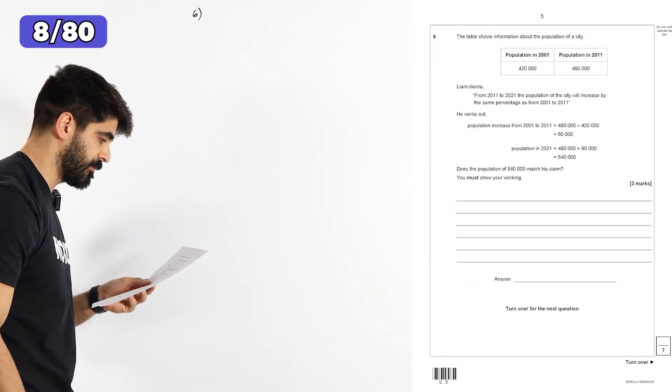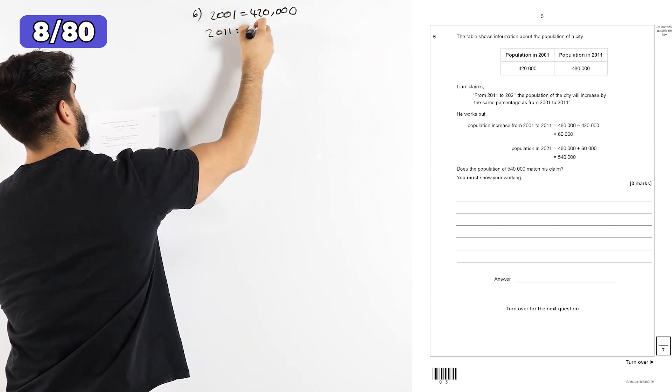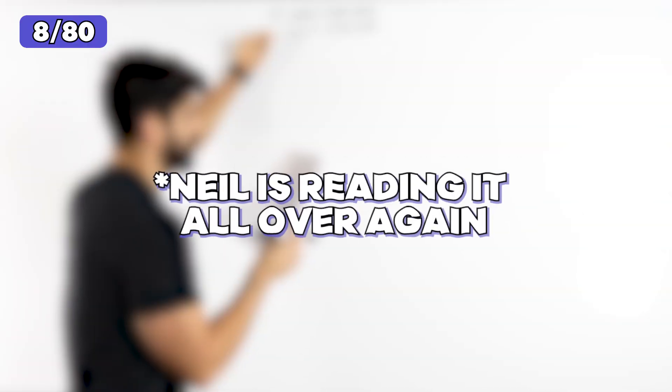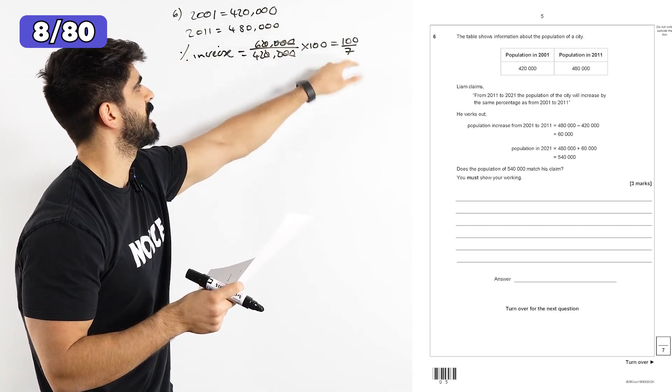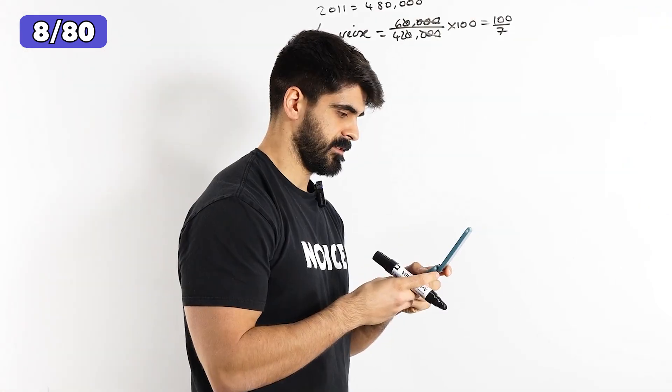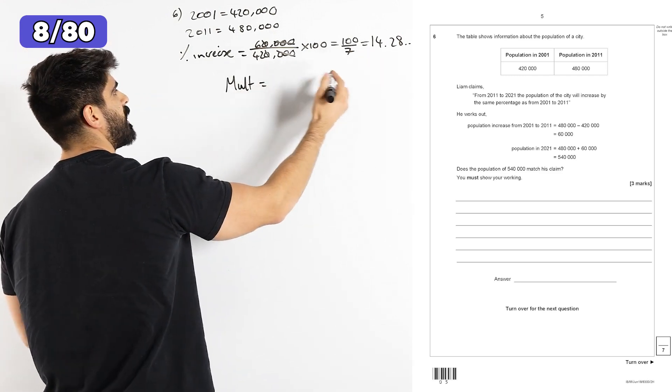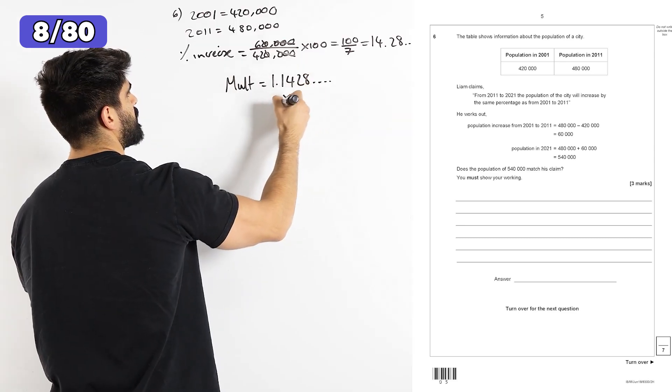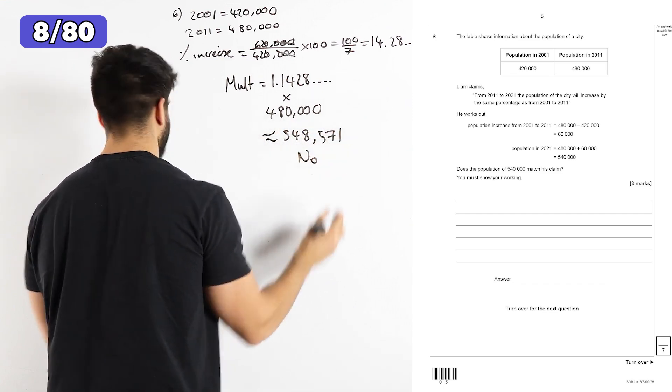Question six. The table shows information about population of a city. In 2001, the population is 420,000. In 2011, it's 480,000. Liam claims from 2011 to 2021. This percentage increase, we need to apply it to this. So we have to do 480,000 increased by this. So get my calculator out. This gives me 14.28, et cetera. So I need to increase this value by 14.28. So I'm going to work out the multiplier, which is going to be this plus a hundred. So our multiplier is 1.1428. And I need to multiply that by 480,000. That gives me about 548,571. So the answer is no, it doesn't. Because the population of 540,000 doesn't match the claim.